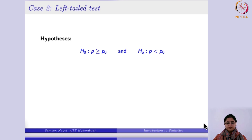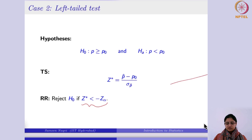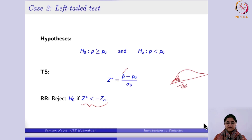For the left-tailed proportion test, the alternative is p < p₀. The test statistic z* is the same formula, but now you compare it against the lower critical value −z_alpha. If the test statistic falls in the left shaded region — that is, z* < −z_alpha — you reject the null hypothesis. The negative sign aligns with the alternative, showing that the observed proportion is less than p₀.